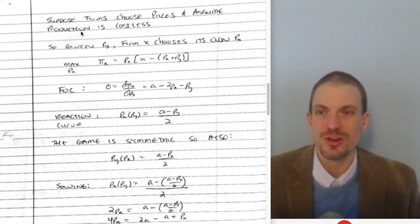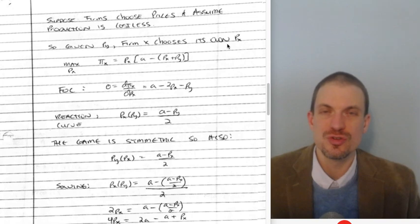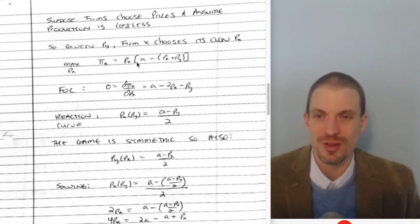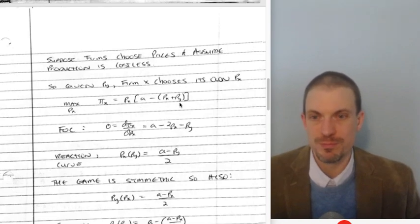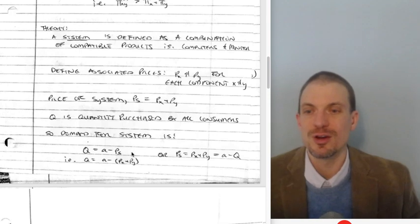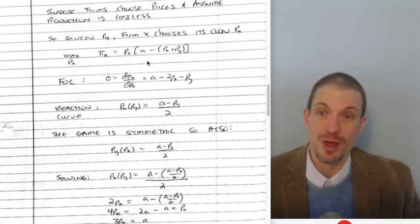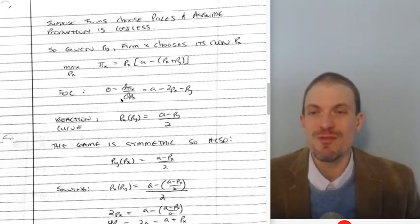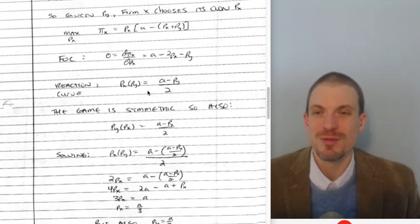Alright. So suppose the firms choose prices and assume production is costless. Given price of good Y, firm X is going to choose its own price. So it's thinking strategically. It's going to try to maximize profit, maximize profit. Economists use pi for profit rather than P because P is for prices. I'm going to choose the price of good X to maximize profits for firm X. So this is price times quantity. This looks weird, but this is price of good X times the quantity of good X. Q is just going to be A minus the sum of PX and PY. That's just from this right here. Alright. So this is price times quantity. This is revenue. We said production is costless. So I'd have like minus zero for costs. My first order condition,